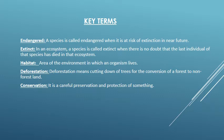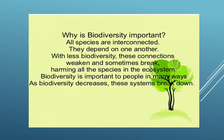The key terms used in this lesson are: Endangered — a species is called endangered when it is at risk of extinction in the near future. Extinct — a species is called extinct when there is no doubt that the last individual of that species has died in that ecosystem. Habitat — the area of the environment in which an organism lives. Deforestation — cutting down of trees for the conversion of a forest to non-forest land. Conservation — careful preservation and protection of something.